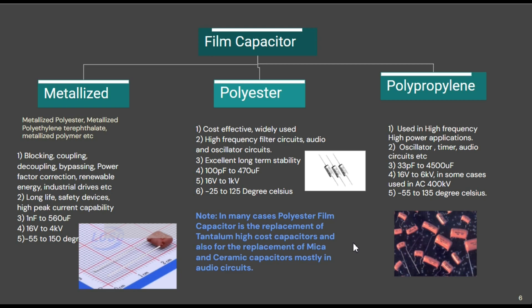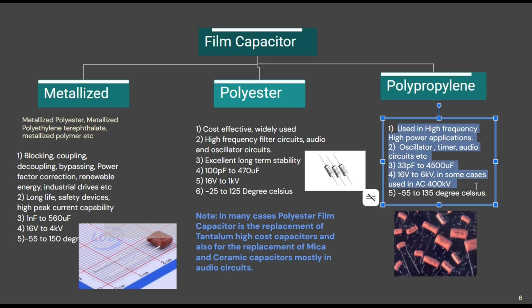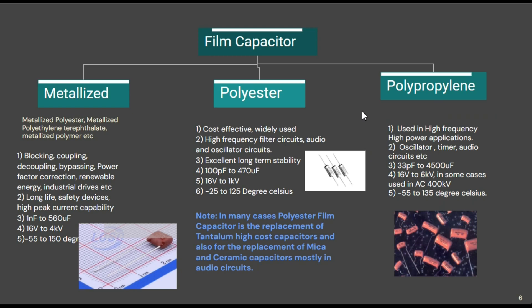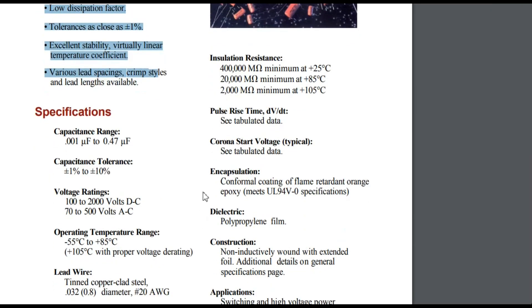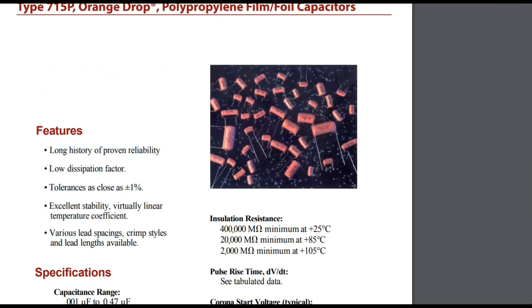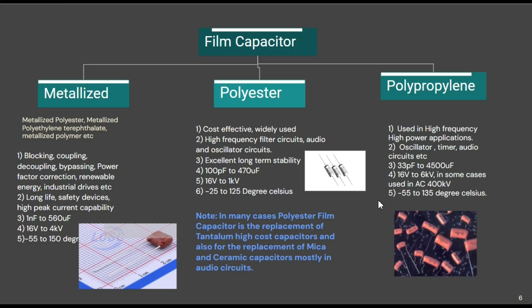The third most commonly used type is the polypropylene film capacitor. This is used in high-frequency, high-power applications like oscillators, timers, and low- and high-power audio circuits. They have a wide capacitance range from 33 picofarad to 4,500 microfarad. One of the most important uses of these capacitors is that they are used in very high voltage ranges — sometimes AC voltage range could be 100 kilovolts and above.